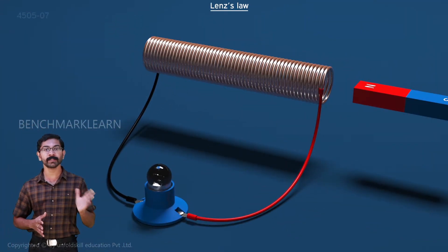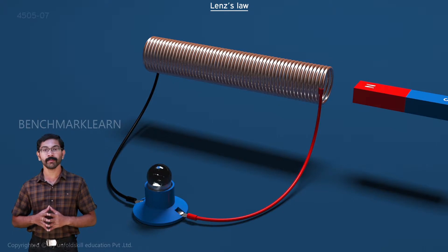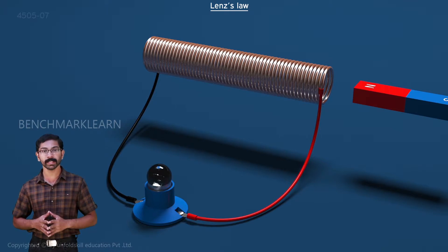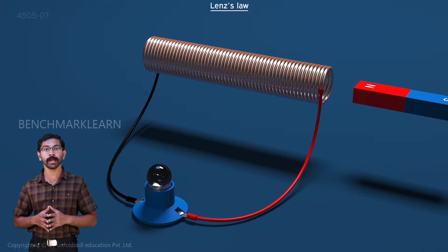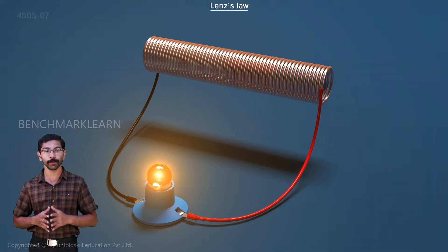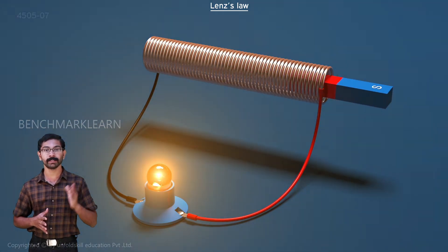Let's take Faraday's experimental setup once again. This time we replace the galvanometer with a light bulb and the coil connected to the battery with a bar magnet. We move the magnet into the coil at a constant velocity, say V. As long as there is a relative motion between the two, the bulb lights up.